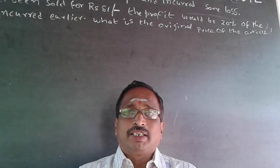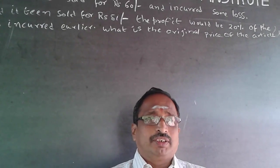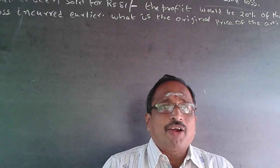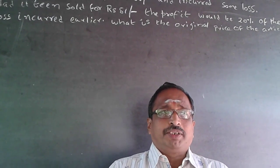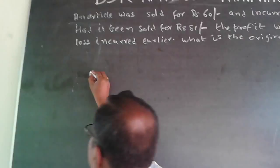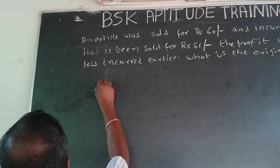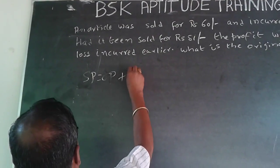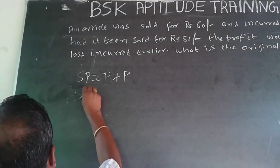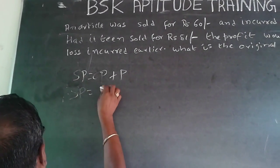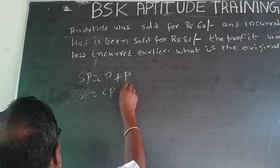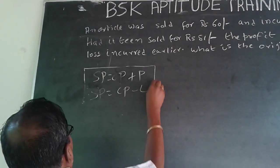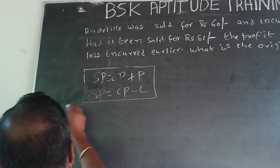This is a cost price and selling price problem. The core rule: selling price equals cost price plus profit when you make a profit, and selling price equals cost price minus loss when you make a loss. This is the foundation for all cost price and selling price problems.